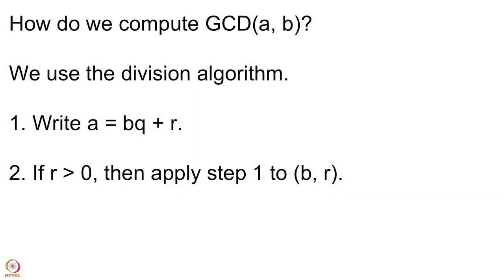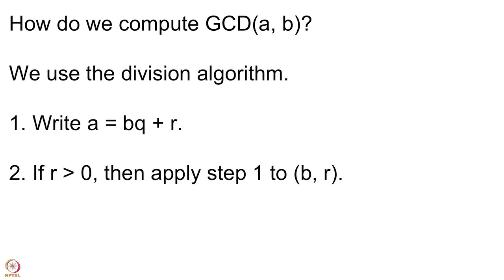That is step 2: if R is bigger than 0 then apply step 1 to the pair (B, R). Ultimately R will be 0 and we are done. We start with A and B, assume A ≥ B, and apply the division algorithm to get A = BQ + R. R ranges from 0 up to B−1. If R is 0 then we have got our GCD which is B, because B divides A. If R is not 0 then we have not yet got our GCD.